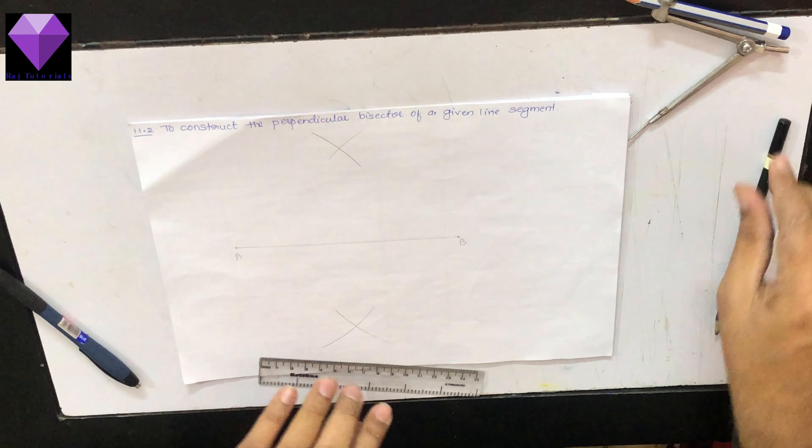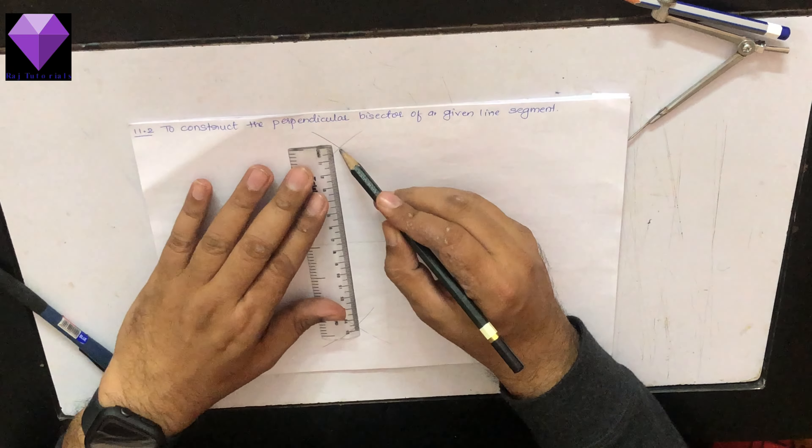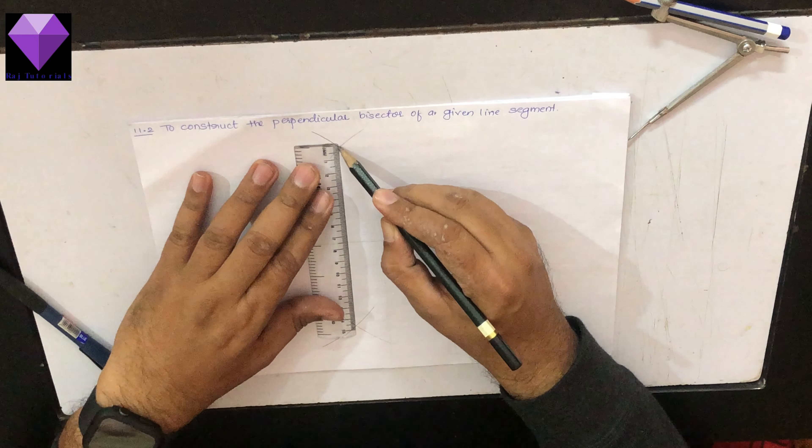Now, I will join these two to get my perpendicular bisector at O point.